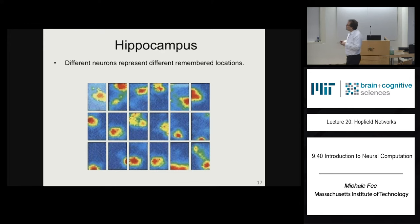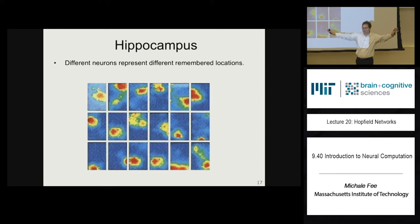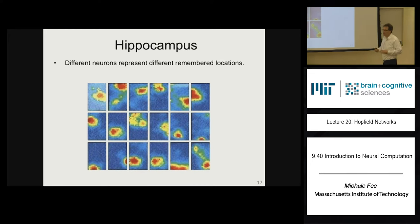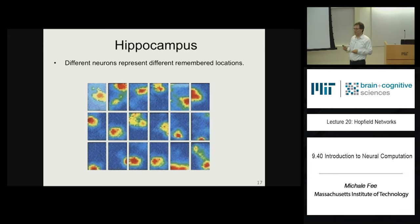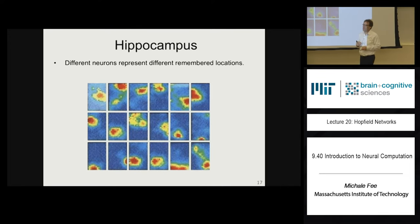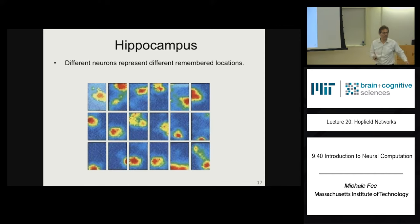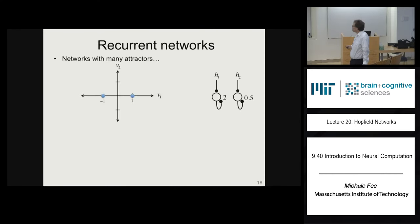Hippocampal place fields act like a spatial memory. More broadly, the hippocampus — especially CA3 — is essential for the formation of memories not just of spatial locations but of life events more generally. For humans, the hippocampus is an essential part of the brain for storing memories.